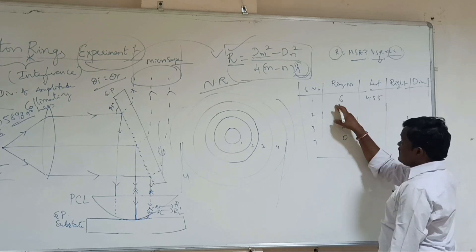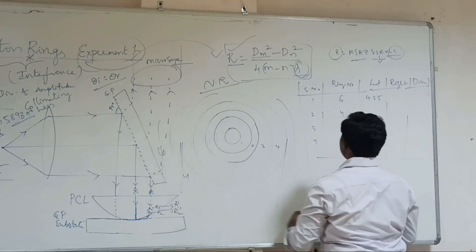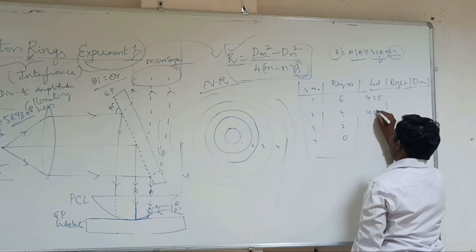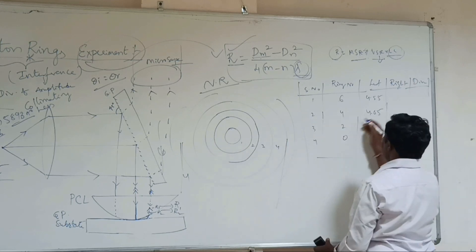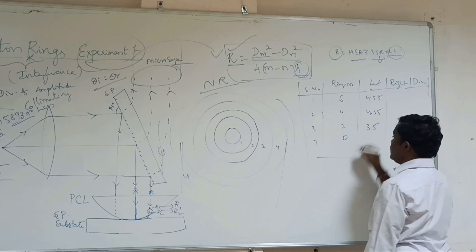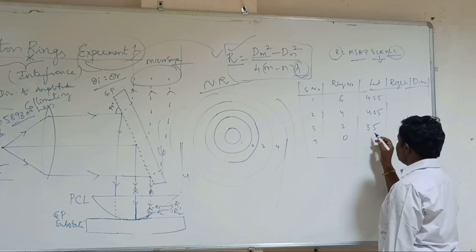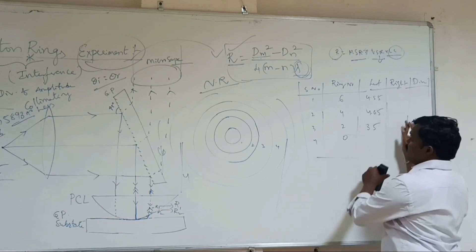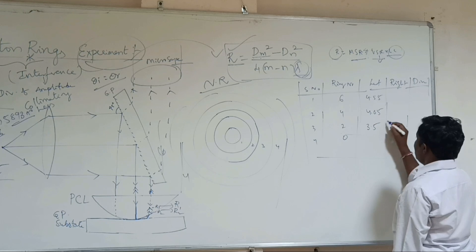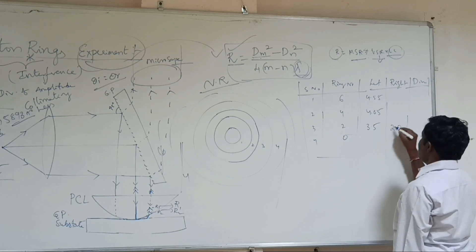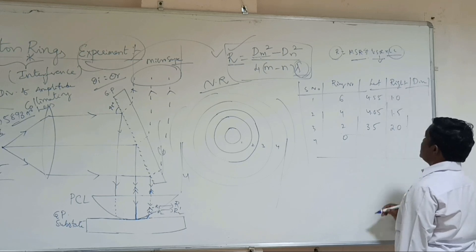For example, the 6th ring reading is 4.55, and the 4th ring is 4.05. Then going into the 2nd ring, that reading may be 3.5. For the 0 ring, you can take it but we are not considering it. Then going to the right side, the readings may be 2.0, then 1.5, then 1.0. These are just example values — not accurate actual figures.